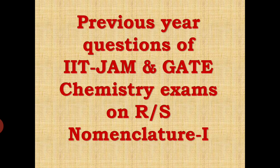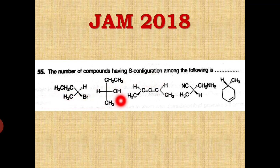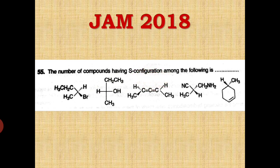In today's lecture we will solve some previous year questions of IIT JAM and GATE exam. This first example is from JAM 2018: the number of compounds having S configuration among the following is. This is a NAT type question — numerical answer type — where you don't get options but have to solve and put a number: 1, 2, 3, or even decimals. You have been given five different structures and have to assign R&S nomenclature for each one and find out how many have S configuration. You can pause the video and try it yourself; the solution is on the next slide.